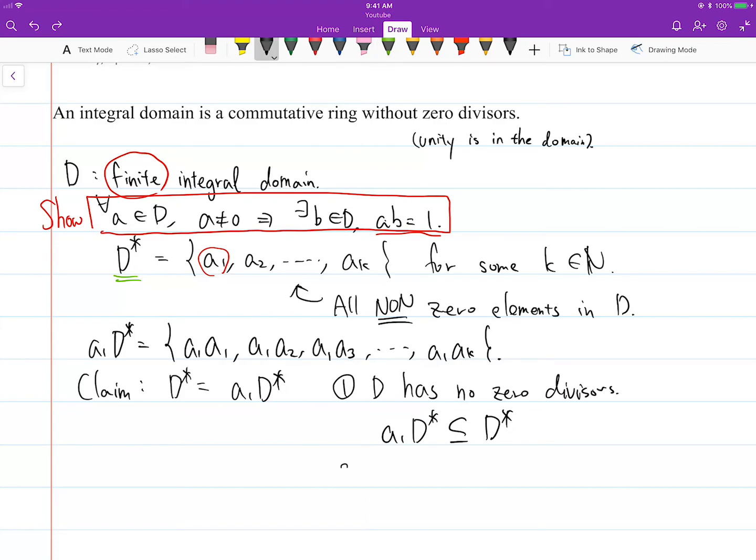So the proof is actually pretty simple. Let i and j be such that A1 times ai equals A1 times aj. Then this would imply A1 times (ai minus aj) equals zero. Again, this is an integral domain, so it has no zero divisors. A1 is a non-zero element. That implies ai equals aj, and that means i equals j.